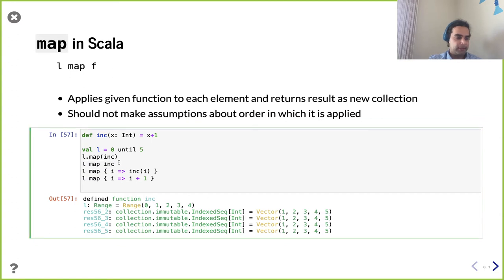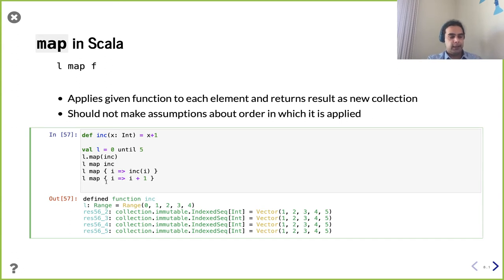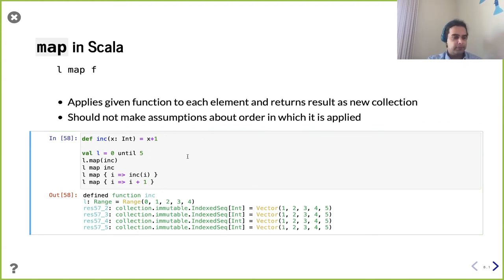So far we're using a previously declared function, but we can start using an anonymous function. We can make an anonymous function which takes in argument i and applies inc to it — or be even more concise and say we take in argument i and add one to it. All of these produce the same result. The most natural syntax is: have a collection, apply map, and the function we apply is an anonymous function — a function literal — taking a single element as argument and returning the new element value. Map: one argument in, one argument out.